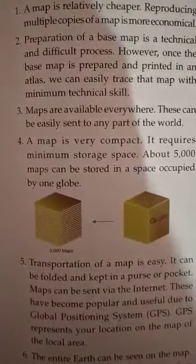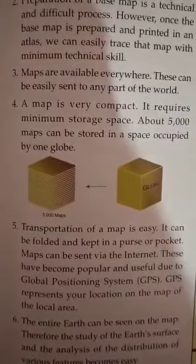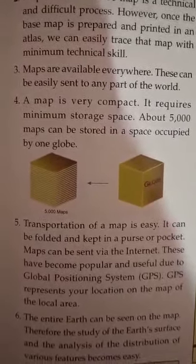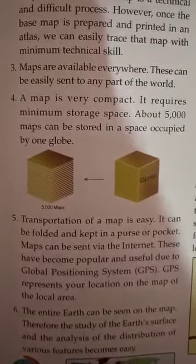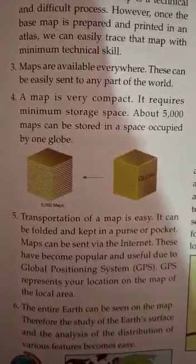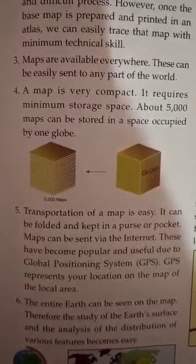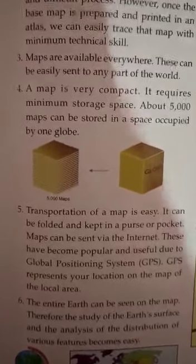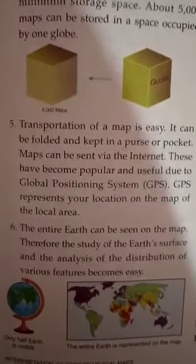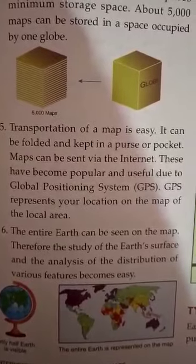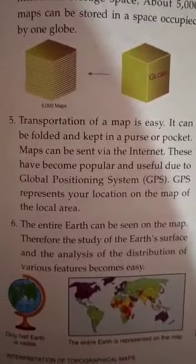A map is very compact, so it doesn't cover much space — about 5,000 maps can be stored in the space occupied by one globe. That is the best thing about a map: it requires less space. Transportation of a map is also very easy — it can be folded and kept in a purse or a pocket.